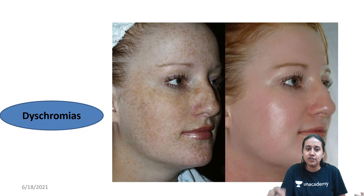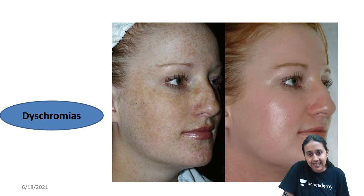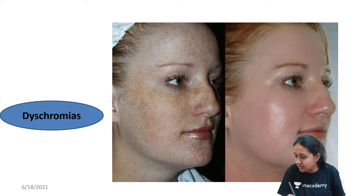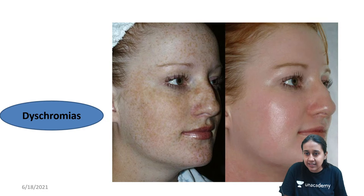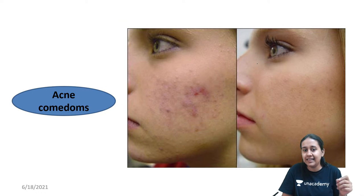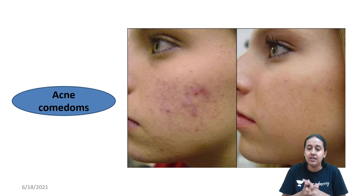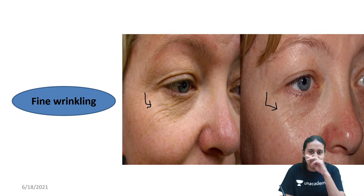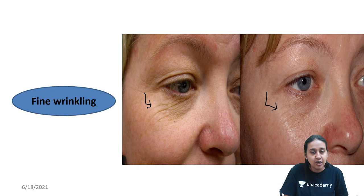The uses of chemical peeling include: first, dyschromia — sequential chemical peeling removes the superficial epidermal pigment and the regrown skin is brighter with no pigmentation. Second, acne — clogged pores and pigmentation associated with acne comedones improve well. Third, fine wrinkles — sequential application of chemical peels stimulates collagen regrowth, leading to improvement in fine wrinkles.